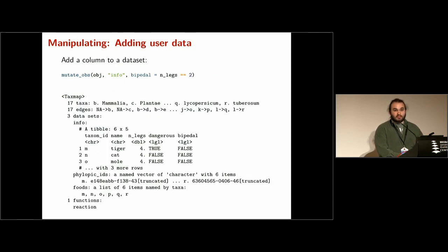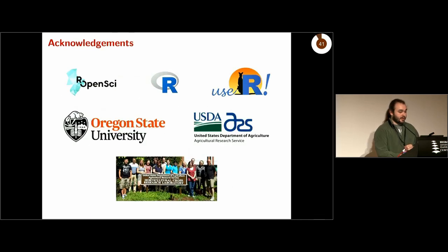There's also the other dplyr analogs - mutate, arrange. I'll show you mutate here if you want to add a column to a data set. This can also add new tables, new vectors, new lists, but I want to show examples of that. Here we're adding this bipedal column right here. So there's a few more things I could show, but I'd like to get my acknowledgements in before I run out of time.